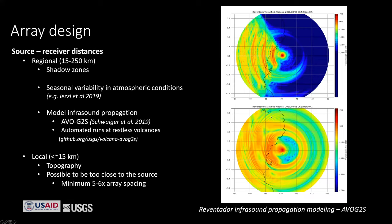Hans ran forward models for Reventador. The top plot is at 0.5 hertz and the bottom at 0.1 hertz. You can see strong winds appear to be out of the east, giving good propagation to the west but very bad propagation to the east — so an array in the eastern area would be very unlikely to pick up infrasound from a Reventador eruption, while one to the south or west would be more likely. And if the eruption was lower frequency, it would be more likely to radiate sound in all directions.